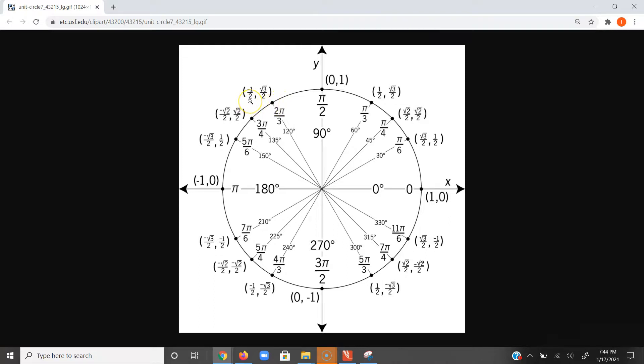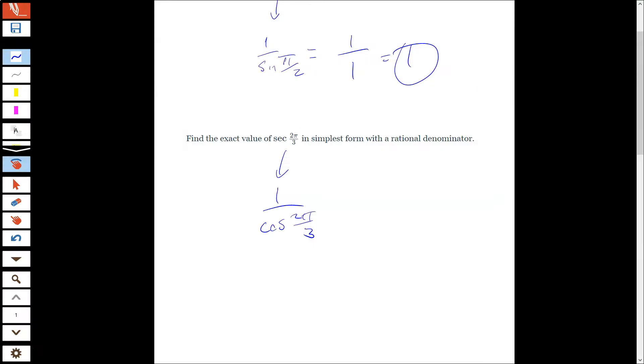2π over 3 is in my second quadrant, and cosine is the x. Sine is the y, cosine is the x. So I'm going to use negative 1 half here. This becomes 1 over negative 1 half. And 1 over something means take the reciprocal of it, so I get negative 2.